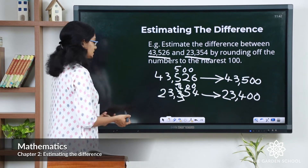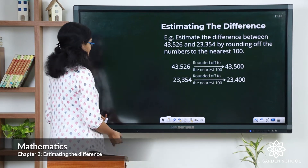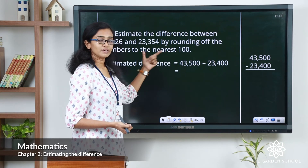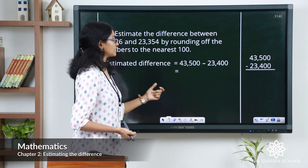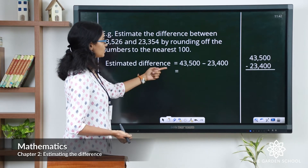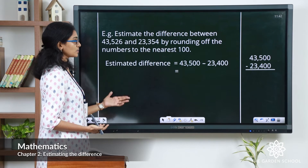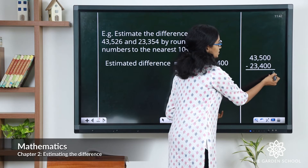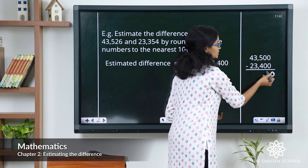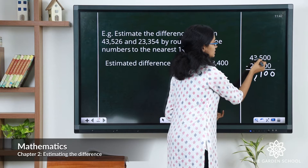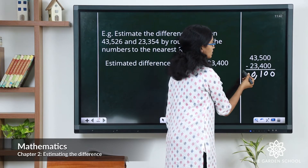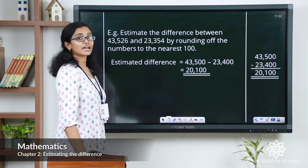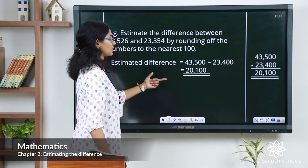Now let's find out the estimated difference. We subtract the estimated values of the minuend and the subtrahend. Substituting the values, we have 43,500 minus 23,400. Let's do the subtraction: 0 minus 0 is 0, 0 minus 0 is 0, 5 minus 4 is 1, 3 minus 3 is 0, and 4 minus 2 is 2. So the estimated difference of this subtraction is 20,100.